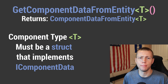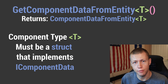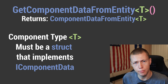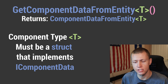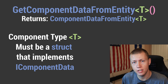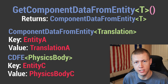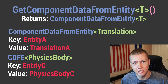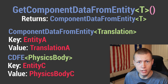So let's talk GetComponentDataFromEntity. You can define a generic type on it, and this type must implement the IComponentData interface — meaning any standard data components inside ECS. This means we cannot pass in any shared components or managed components; it must be a struct implementing IComponentData. It returns a type of ComponentDataFromEntity, which is essentially a collection, basically like a dictionary or key-value pair, where the key is the entity and the value is the component.